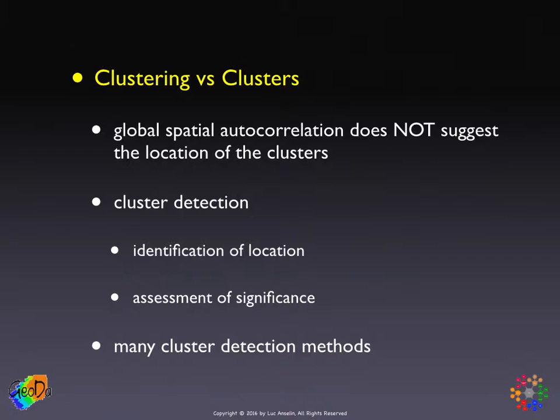There are two aspects to cluster detection. One is obviously the identification of the location — where are these clusters? The other is the assessment of significance, which turns out to be quite complex because of the problem of multiple comparisons. If you test long enough, you ultimately find something significant, but you're fooling yourself — the p-value after multiple tests is no longer 0.05, but more like 0.20.